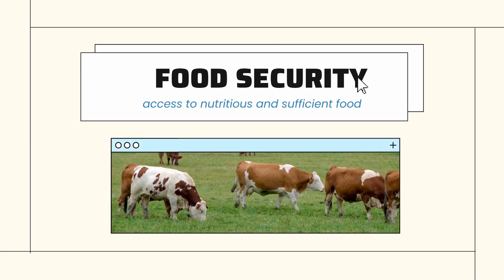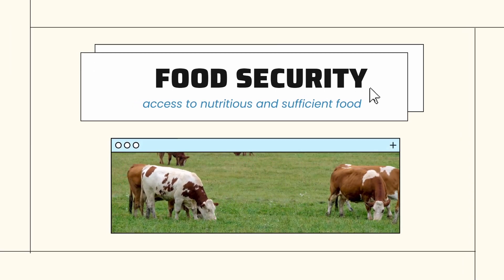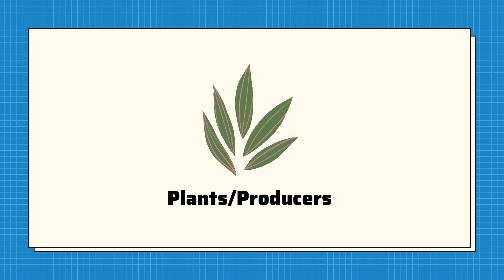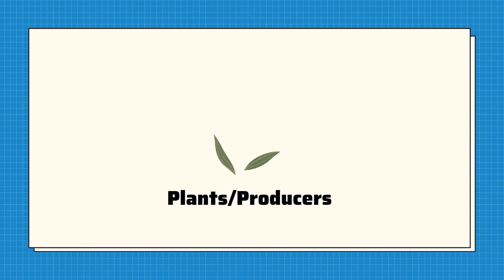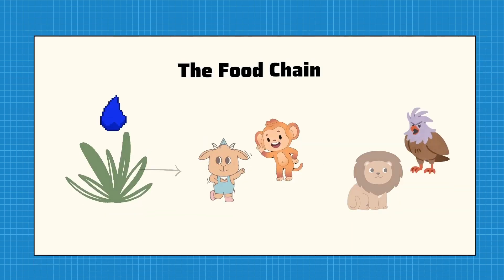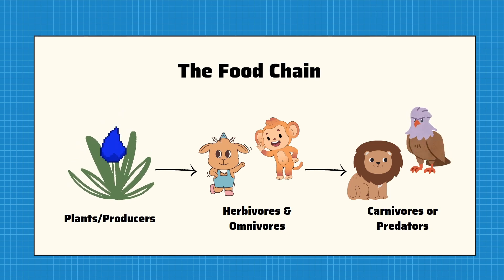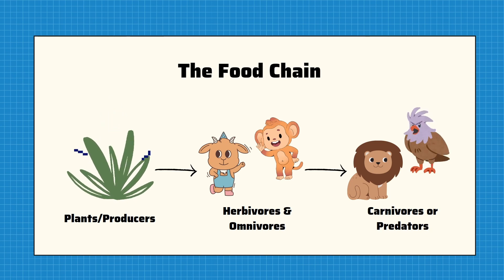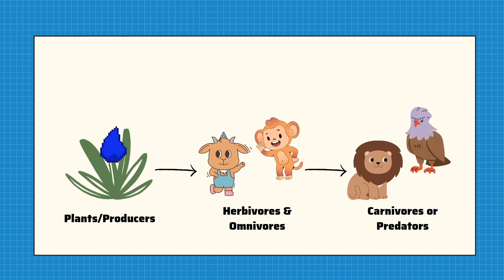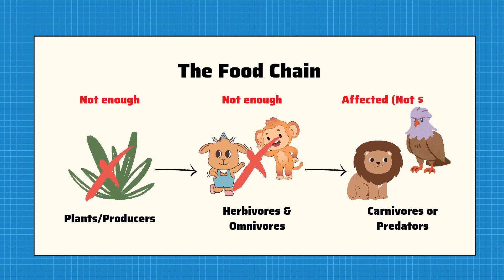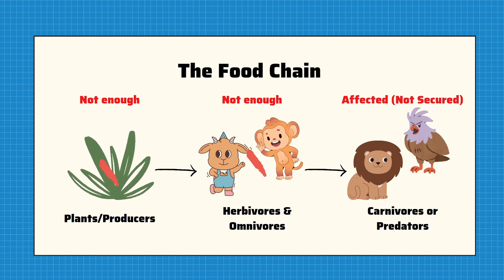Food security is dependent on water because it is a necessary intake for all living things in order to survive. A producer, the foundation of all food chains, relies heavily on water for development and survival, and therefore directly or indirectly plays a critical role in ensuring the survival of consumers in each food chain. Food security for higher consumers will be unstable because there won't be enough food for all herbivores or omnivores if there are fewer plants to eat, consequently affecting predators and carnivores as well.